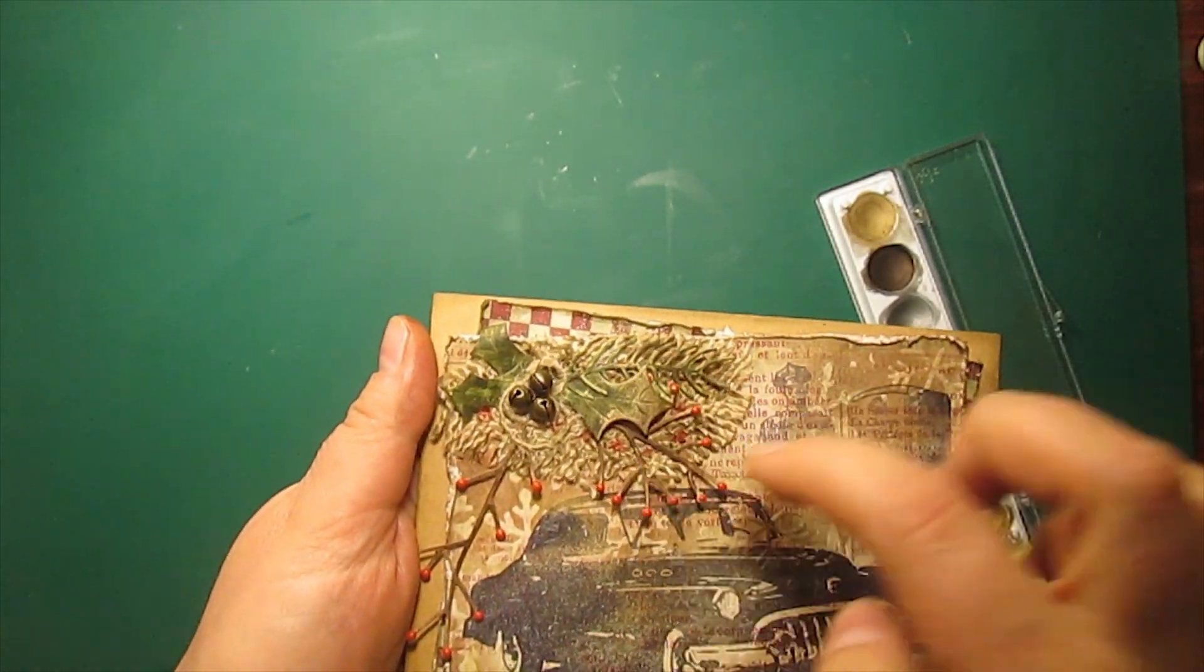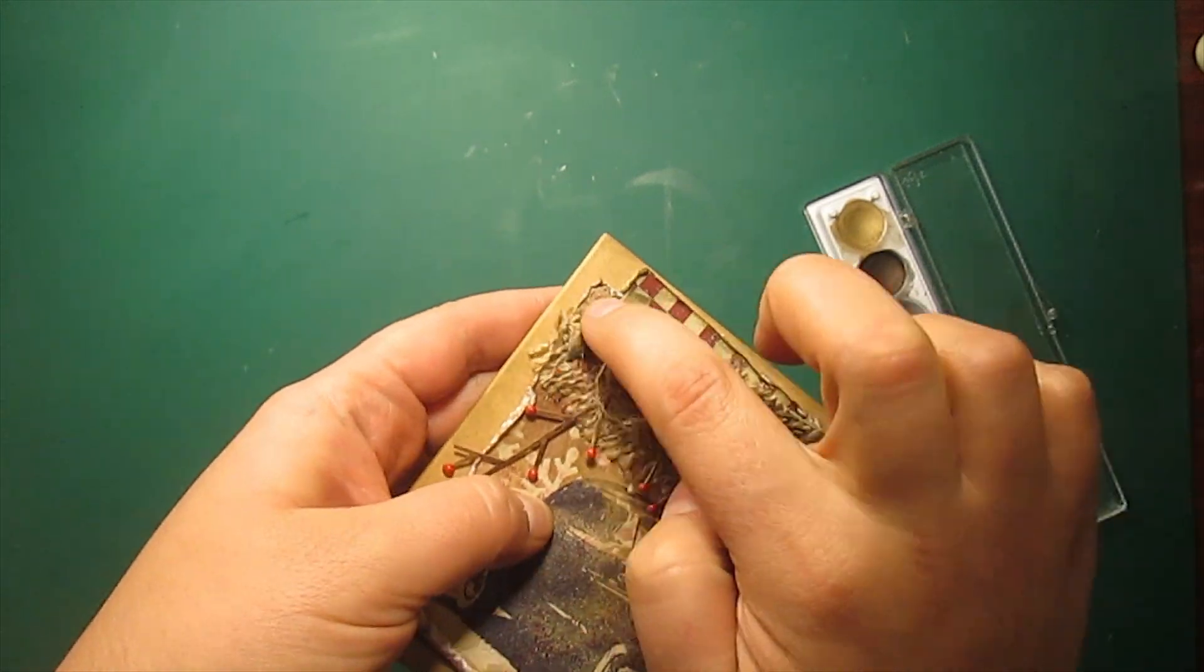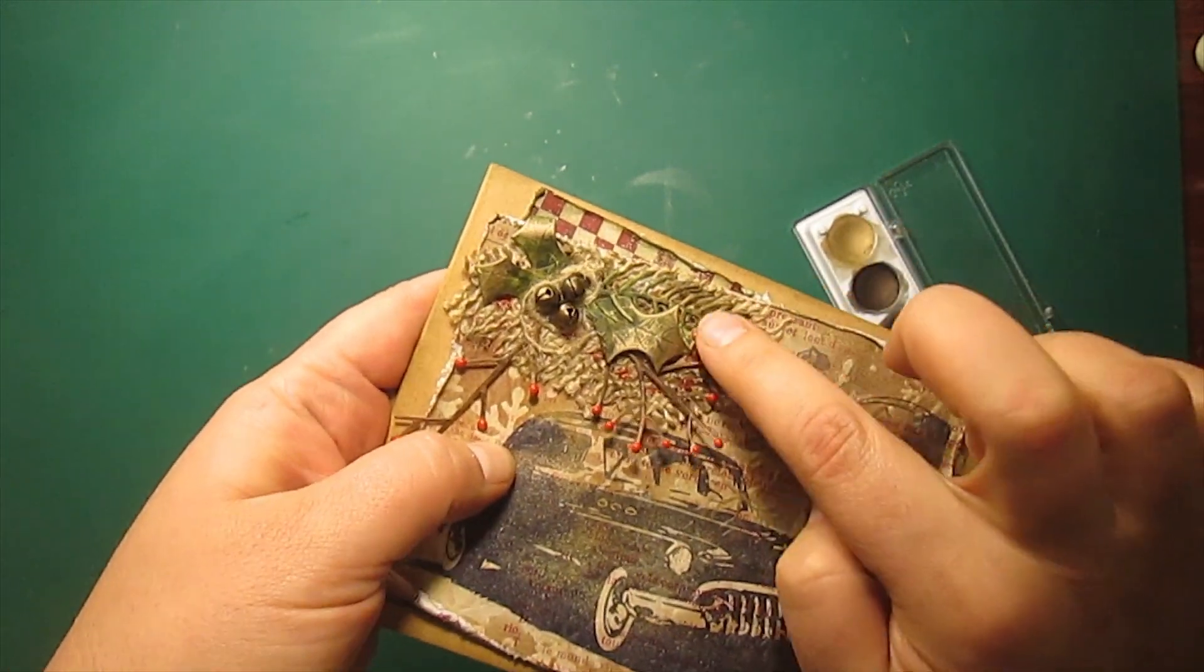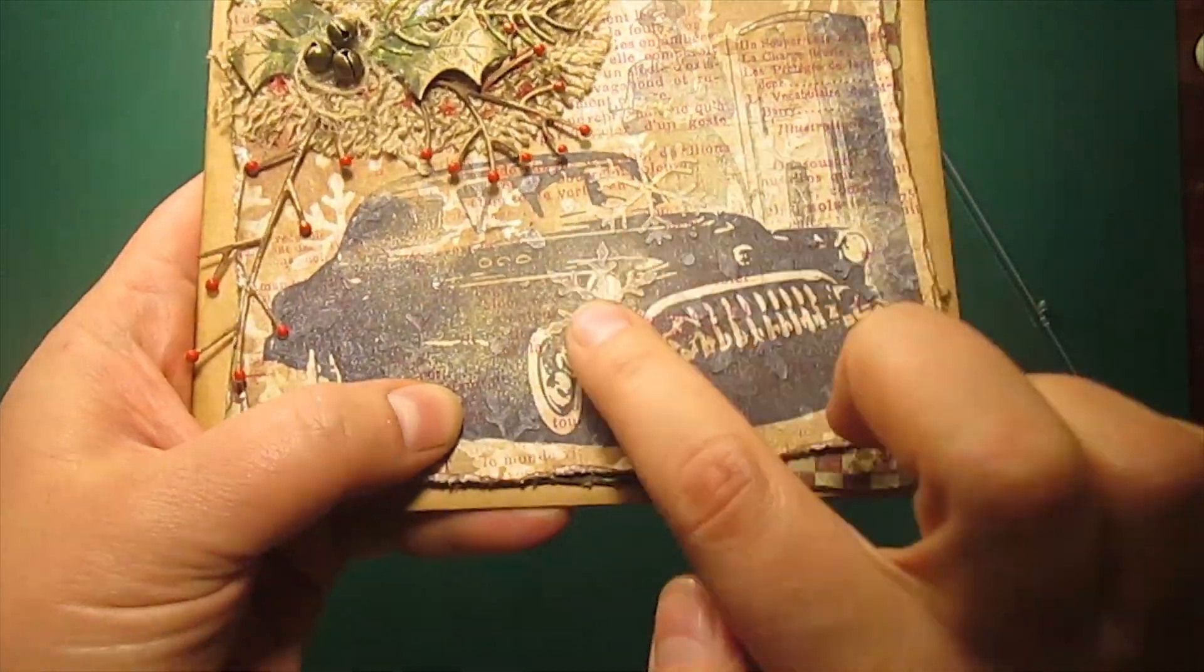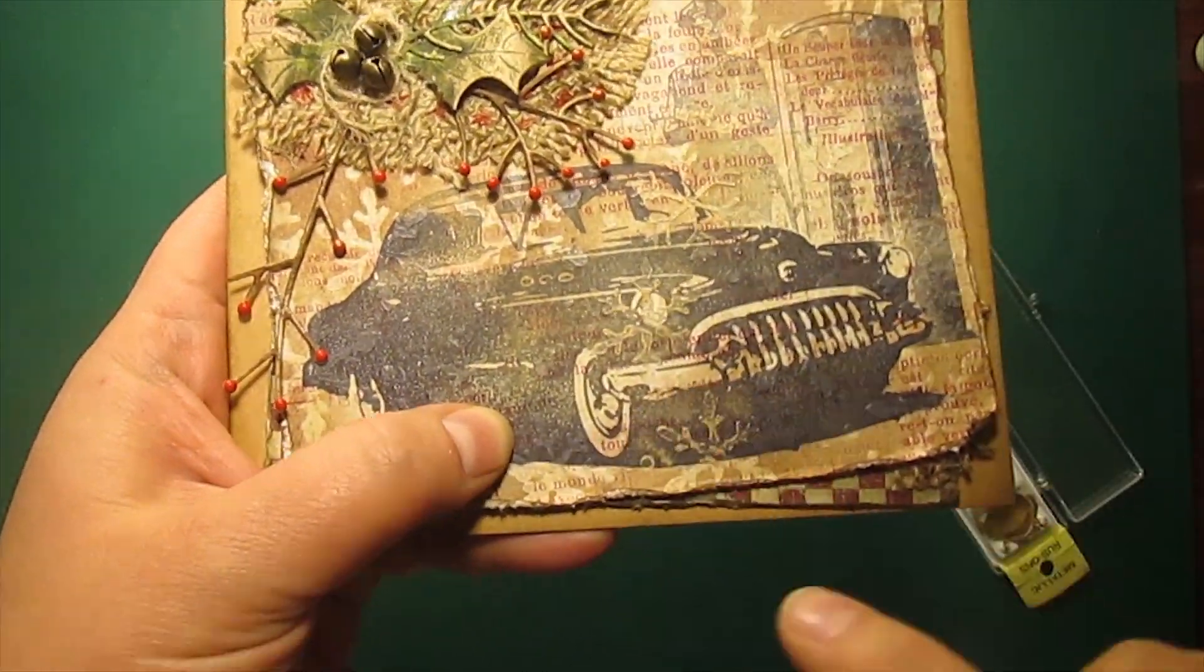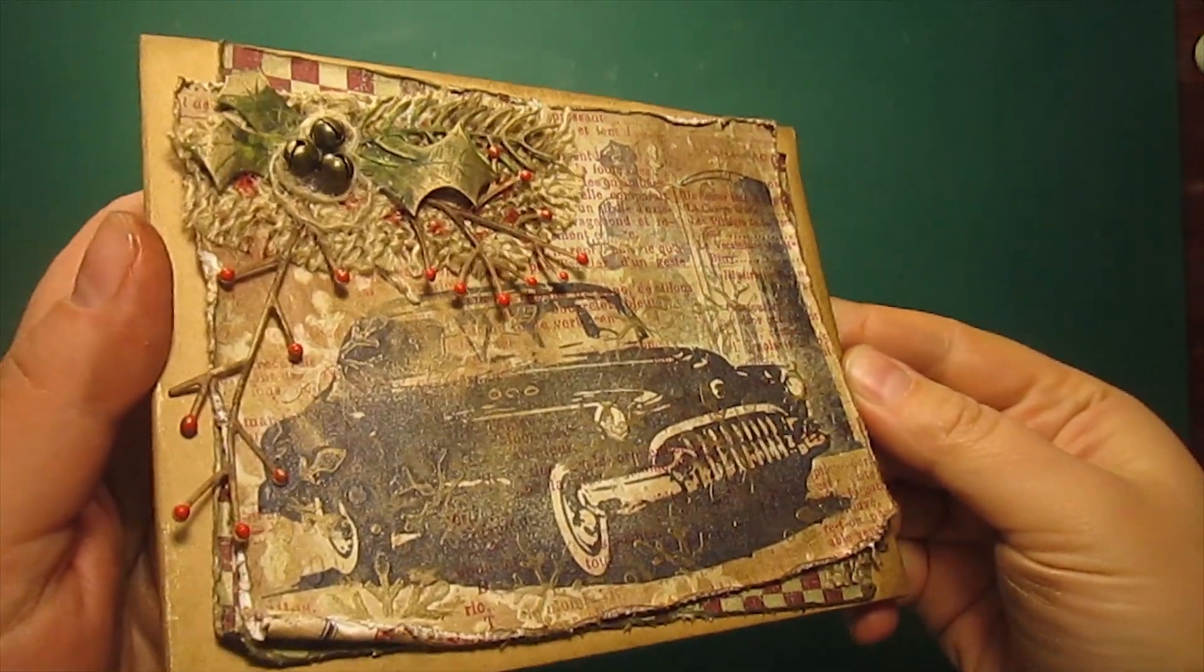As the last touch I'm applying some metallic rub-on paint onto the leaves and branches as well as onto the stenciled snowflakes. This will add some shine, make textures stand out and bring all the elements together. And the card is finished.